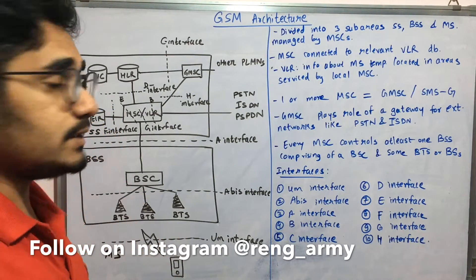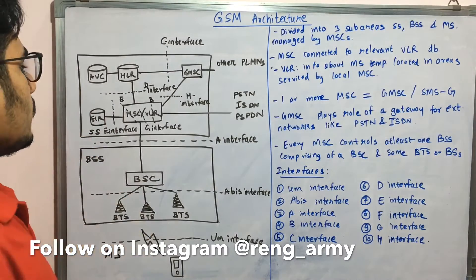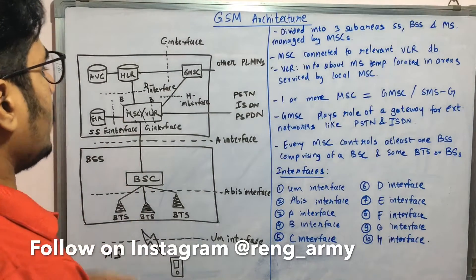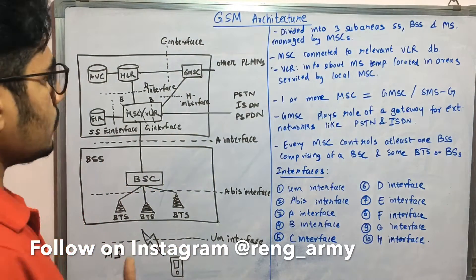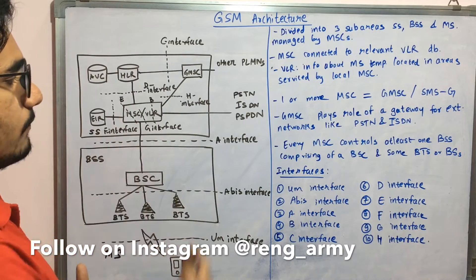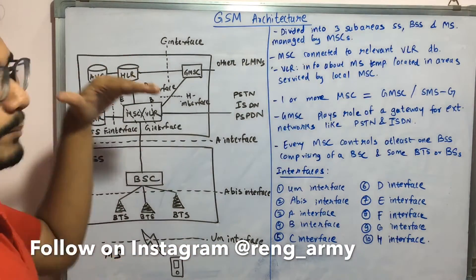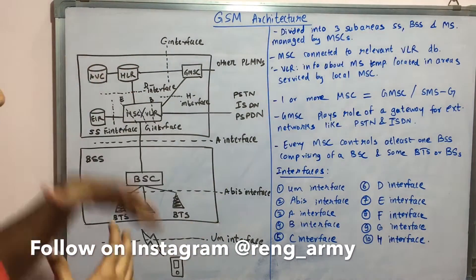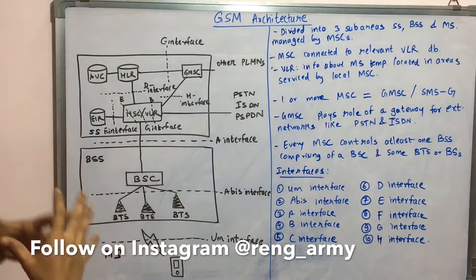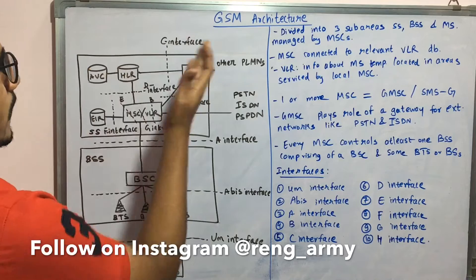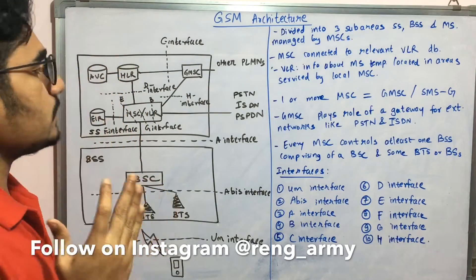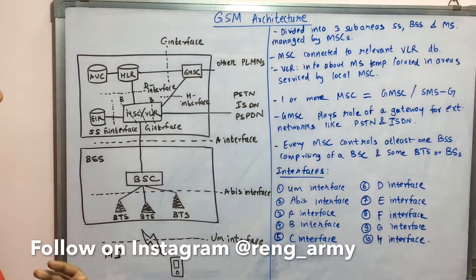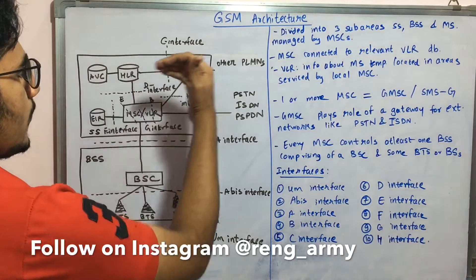In the Switching System you also have the EIR — Equipment Identity Register — and certain MSCs (Mobile Switching Centers), and the VLR (Visitor Location Register). All these are connected by various interfaces. There are around 10 different interfaces; for simplicity we'll consider only these 10. The interface sitting between the HLR and the GMSE (or the SMS Gateway) is the C interface.